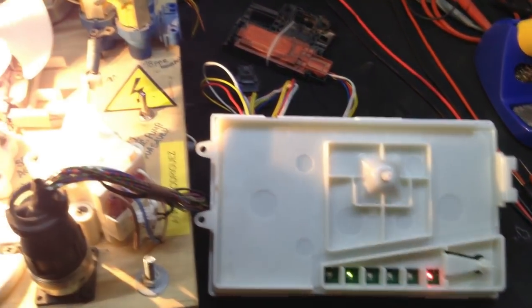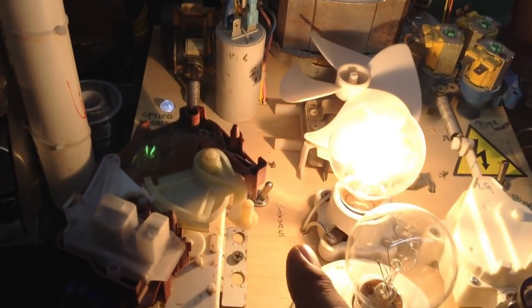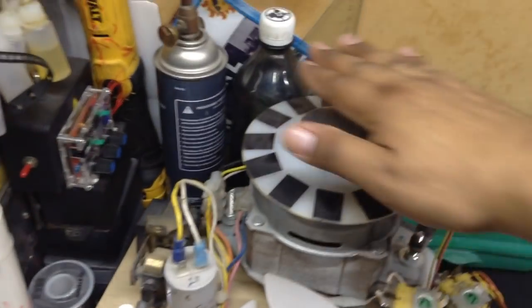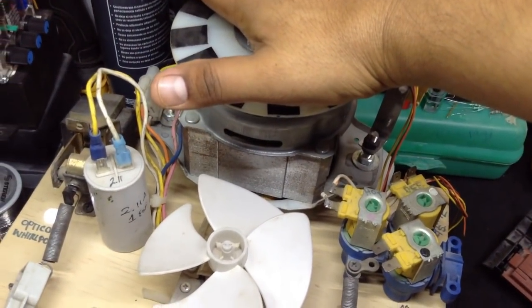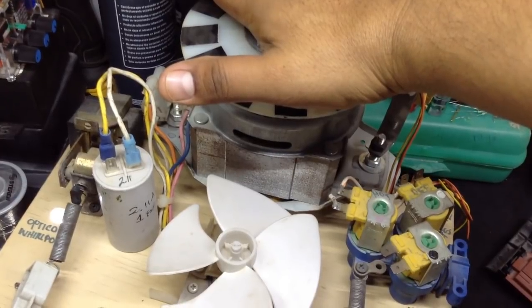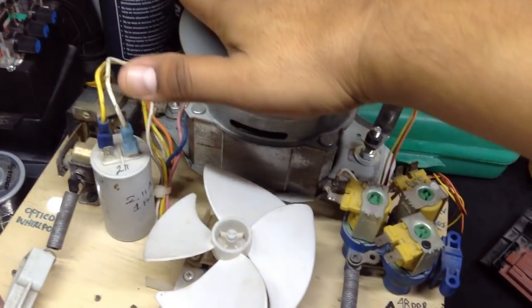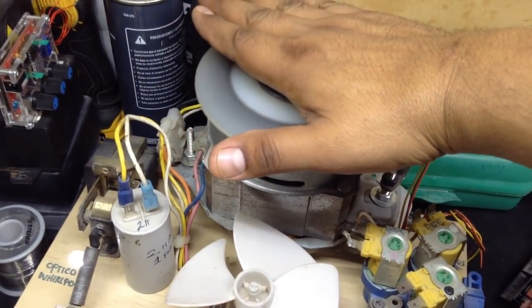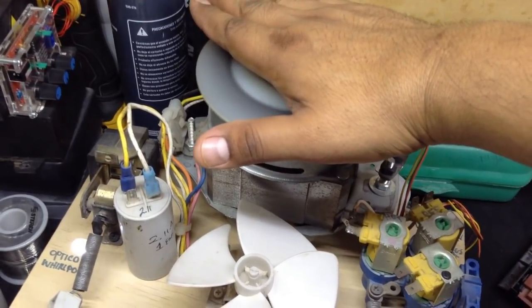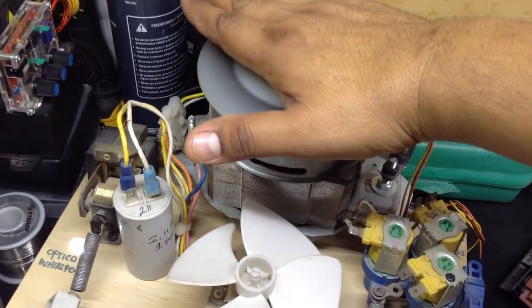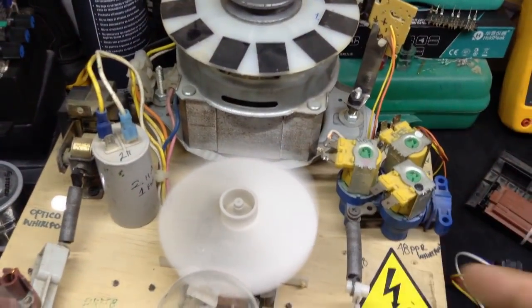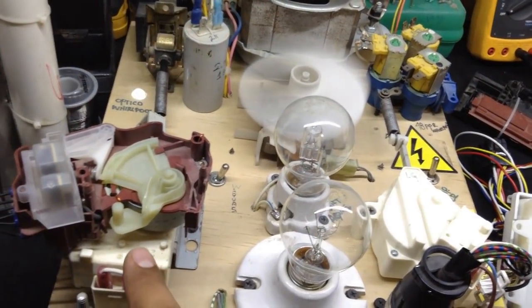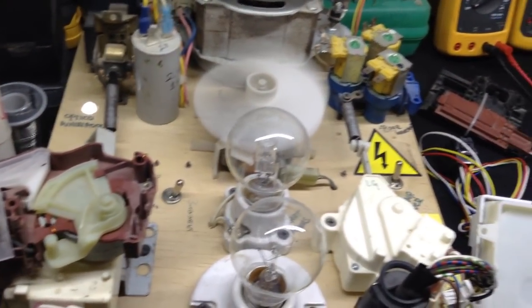Vamos a esperar unos segundos más. Allí entra el actuador, va, viene, se detiene para lavar y vamos a ver que lave. Yo presiento que si lo hará. Perfecto, bomba de agua y posterior haga el cambio. El actuador de posición para ir exprimido.